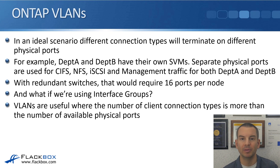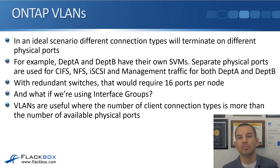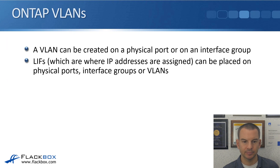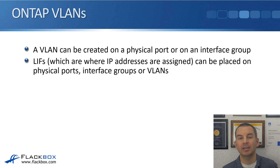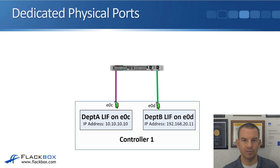Very often it won't be possible to dedicate separate physical ports to the different connection types. VLANs are useful where the number of client connection types exceeds the number of available physical ports. A VLAN can be created on a physical port or on an interface group. LIFs — our logical interfaces, where IP addresses are assigned — can be placed on physical ports, interface groups, or VLANs.